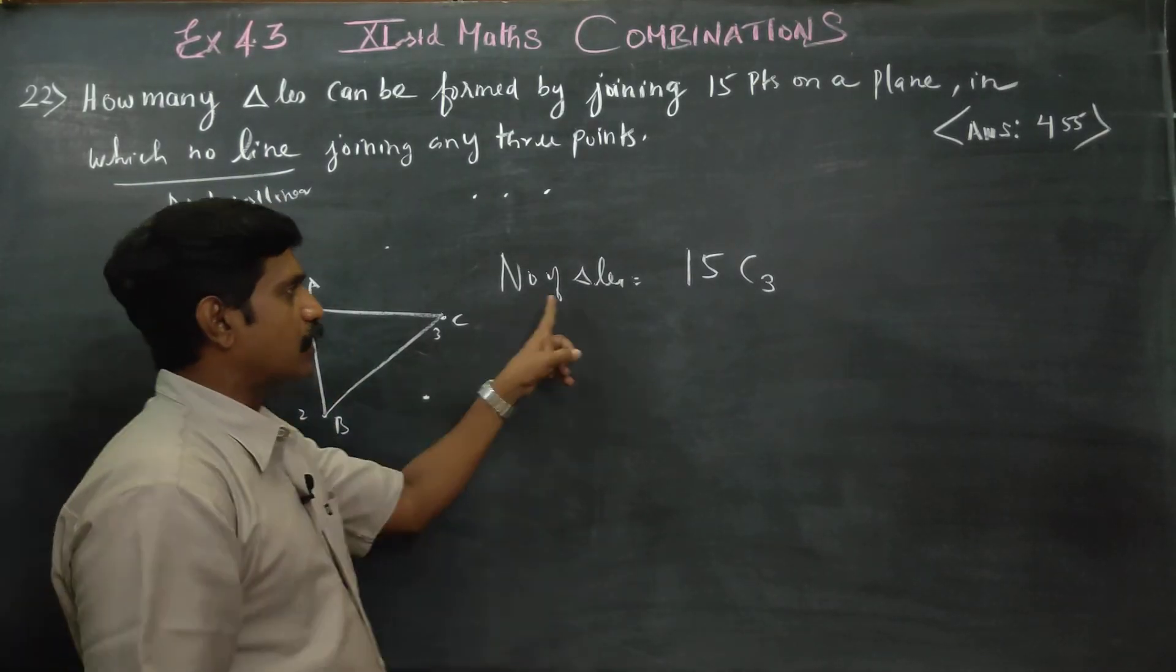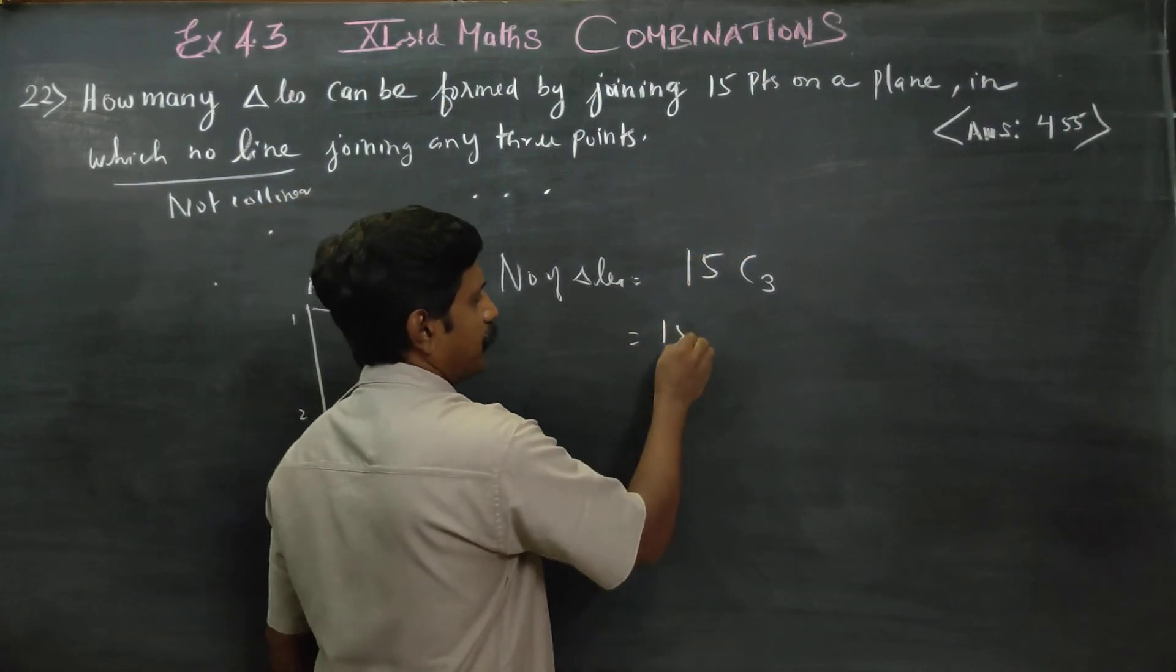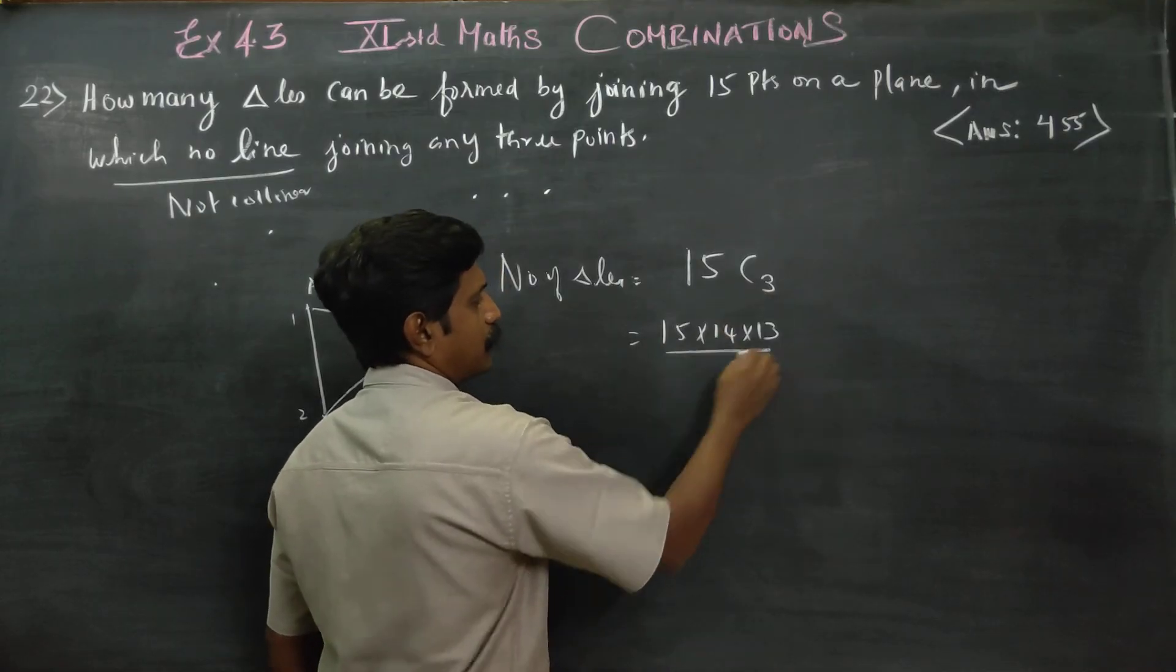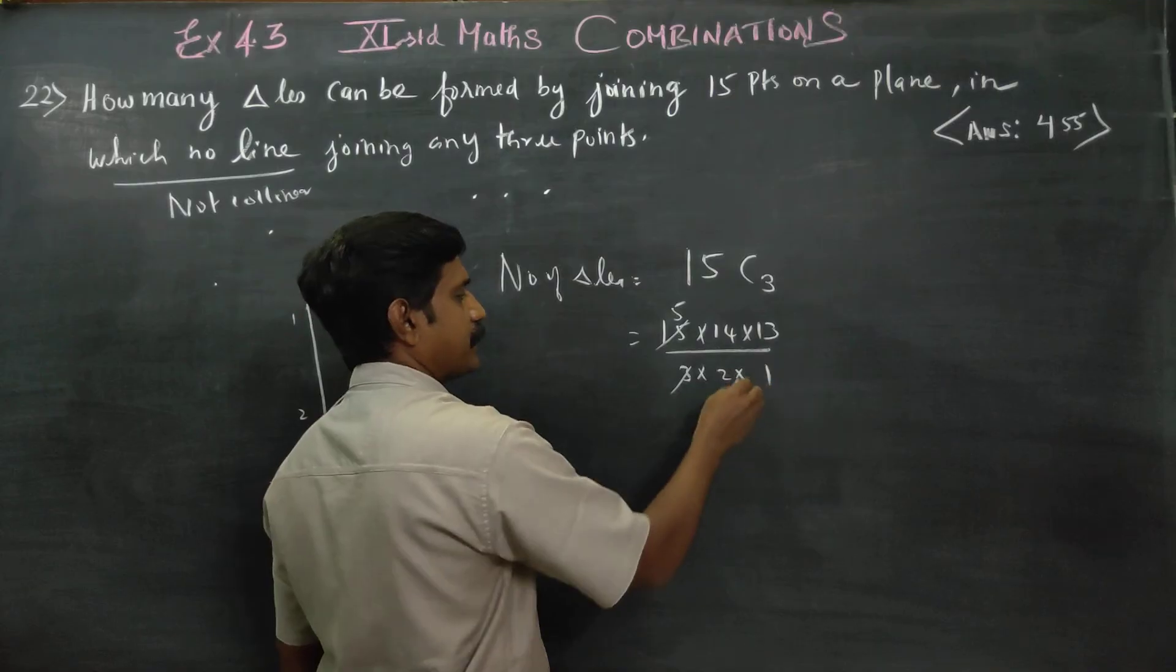15C3 equals 15 × 14 × 13 divided by 3 factorial, which is 3 × 2 × 1. If you cancel, 5 times 7 equals 35.